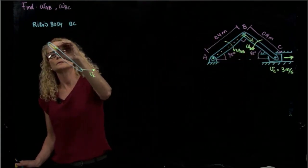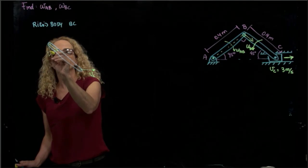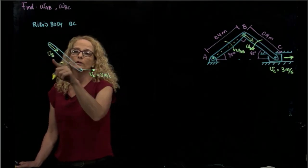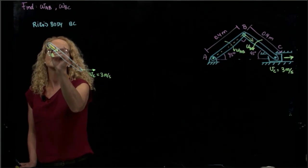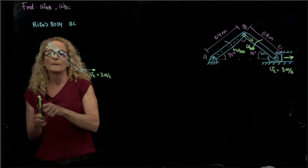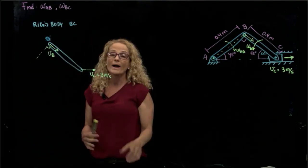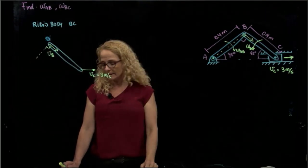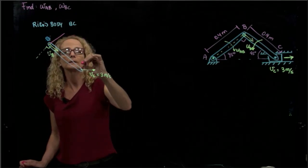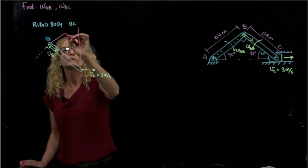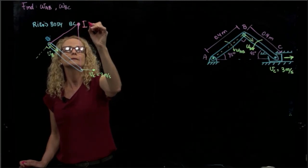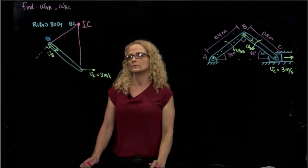The velocity of B — the value is unknown. We know the velocity of C, but we know that the velocity of B is perpendicular to bar AB. So where is the center of rotation located? It's perpendicular to that and perpendicular to that. Connecting those two lines, we find the instant center of rotation.